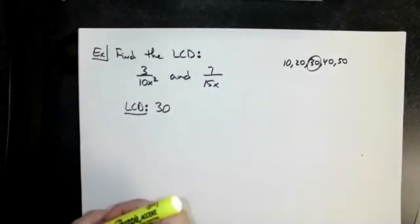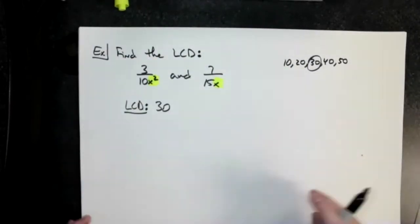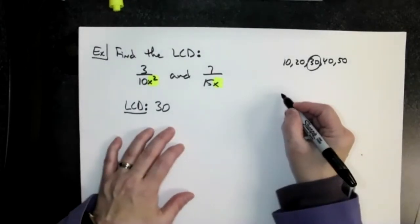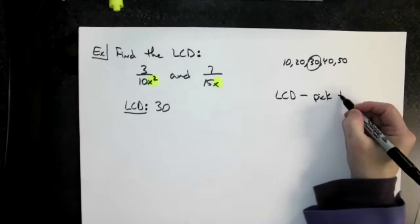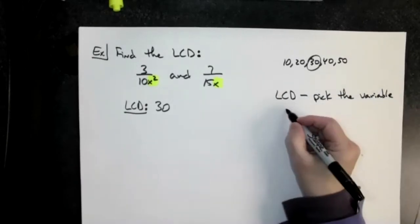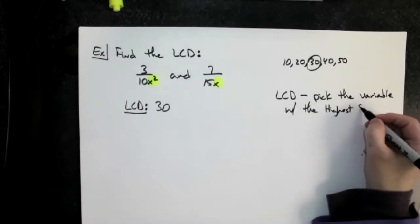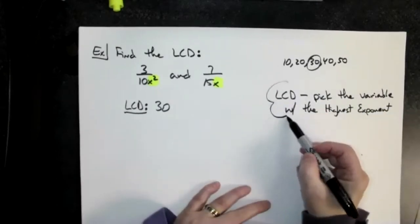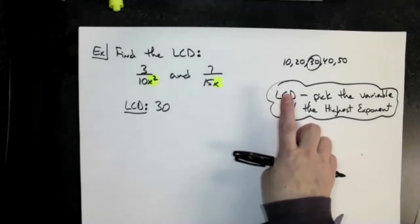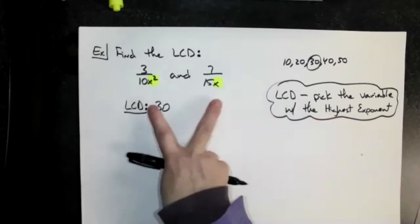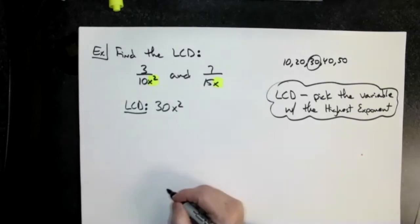Now look at the variables. I've got an x squared in the first one and an x in the second one. When finding the least common denominator with variables that have exponents, you pick the variable with the highest exponent. That's a little mnemonic to memorize — it says 'least' common denominator but you pick the highest exponent. So I've got x to the first and x squared, which means I pick x squared. That's my least common denominator.